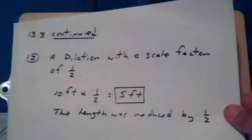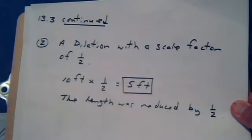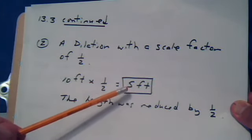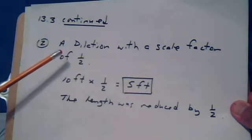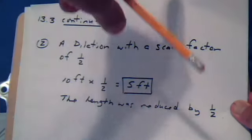A dilation with a scale factor of one-half would imply that the original length is going to be multiplied by one-half. So the original length is 10 feet and now it's 5 feet. We see that the dilation was a reduction. The length was reduced by one-half.